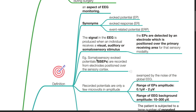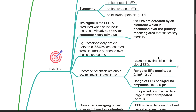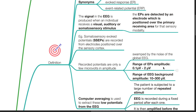The EPs are detected by an electrode positioned over the primary receiving area for that sensory modality. For example, somatosensory evoked potentials are recorded from electrodes positioned over the sensory cortex. Recorded potentials are only a few microvolts in amplitude and are swamped by the noise of the global EEG. The range of EPs is 0.1 to 2 microvolts, while the EEG background amplitude ranges from 10 to 300 microvolts.